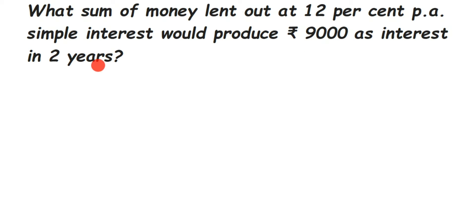We have to find out the sum — whenever they say 'sum', understand it means principal. We have to find out the principal P. We know the rate which is 12%, we know the simple interest which is 9,000, and we also know the time.